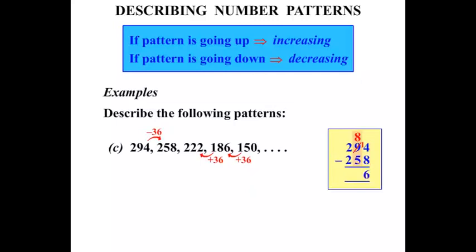8 minus 5 is 3. 2 minus 2 is nothing. So we have 36 as a difference. So yes we are right. So we can see then the pattern is going down by 36. We say the pattern is decreasing by 36.